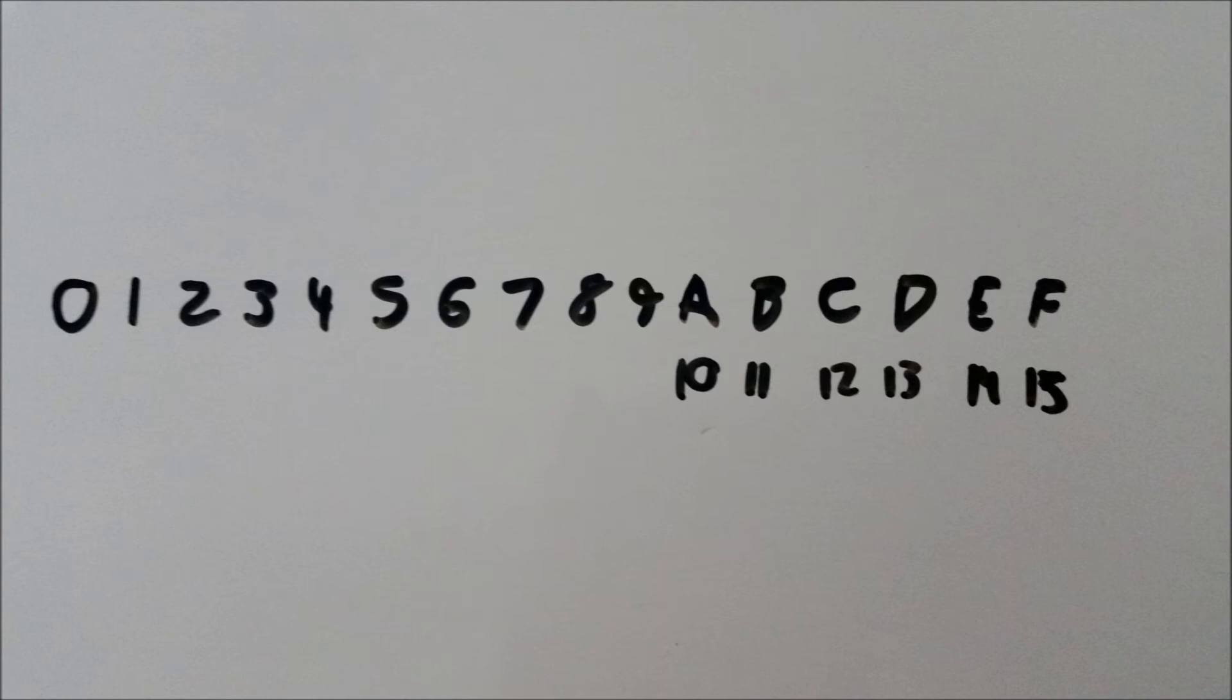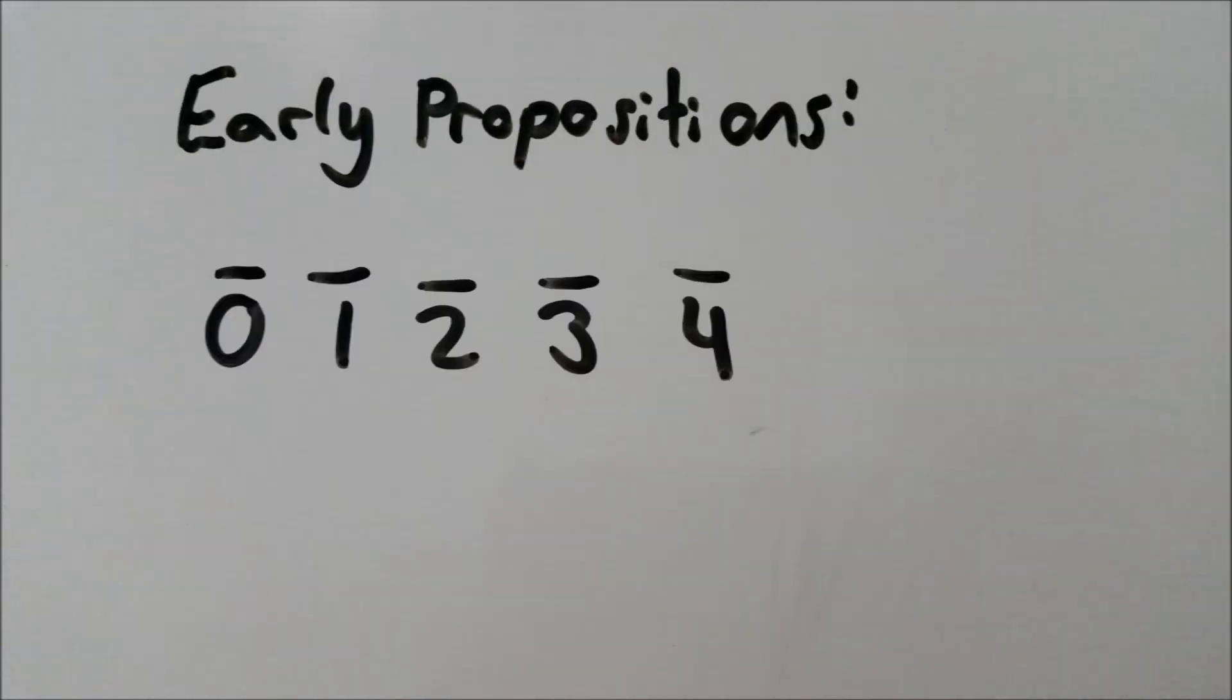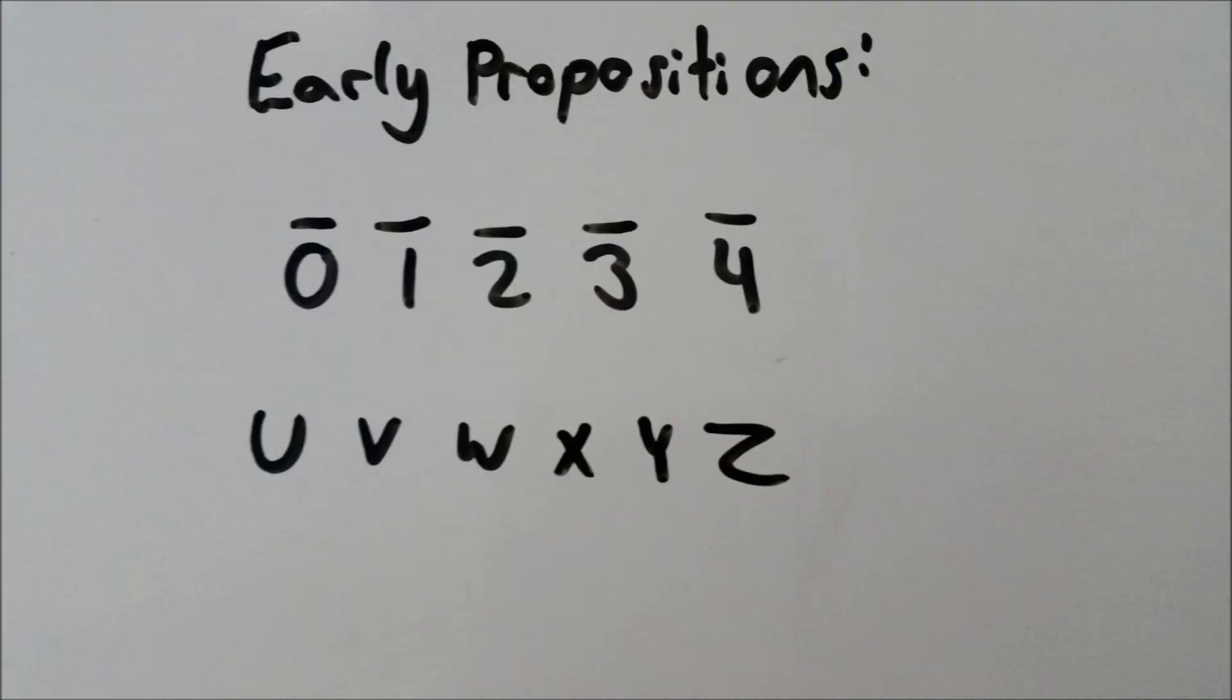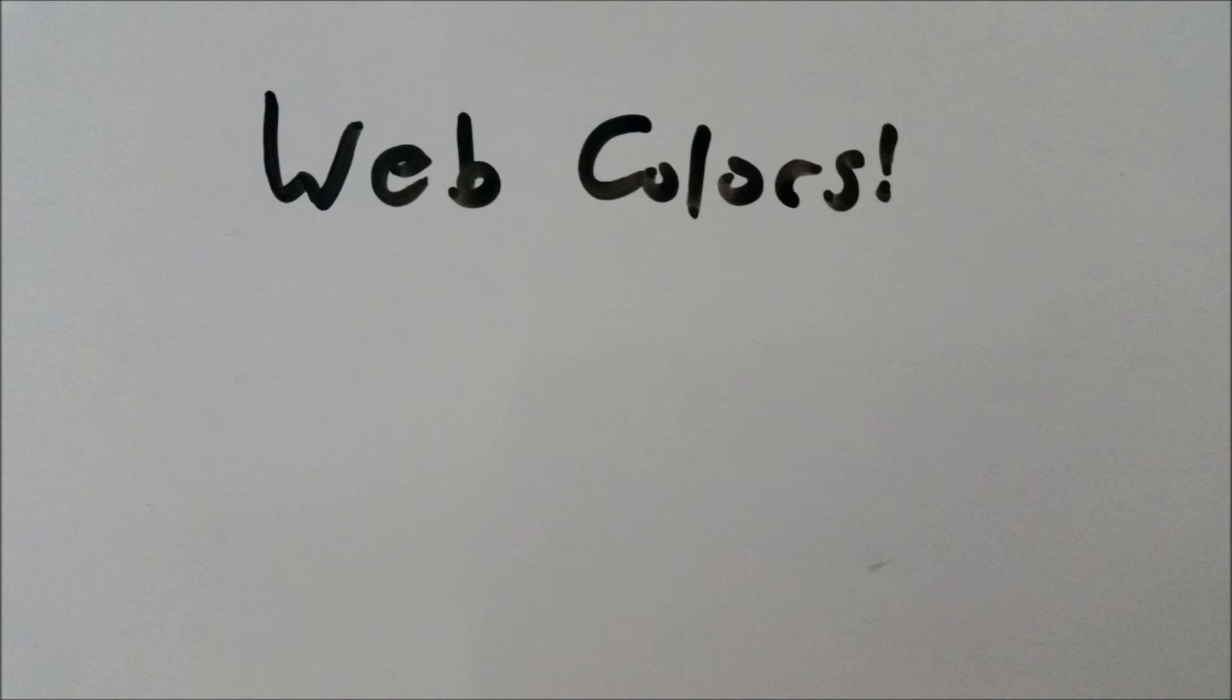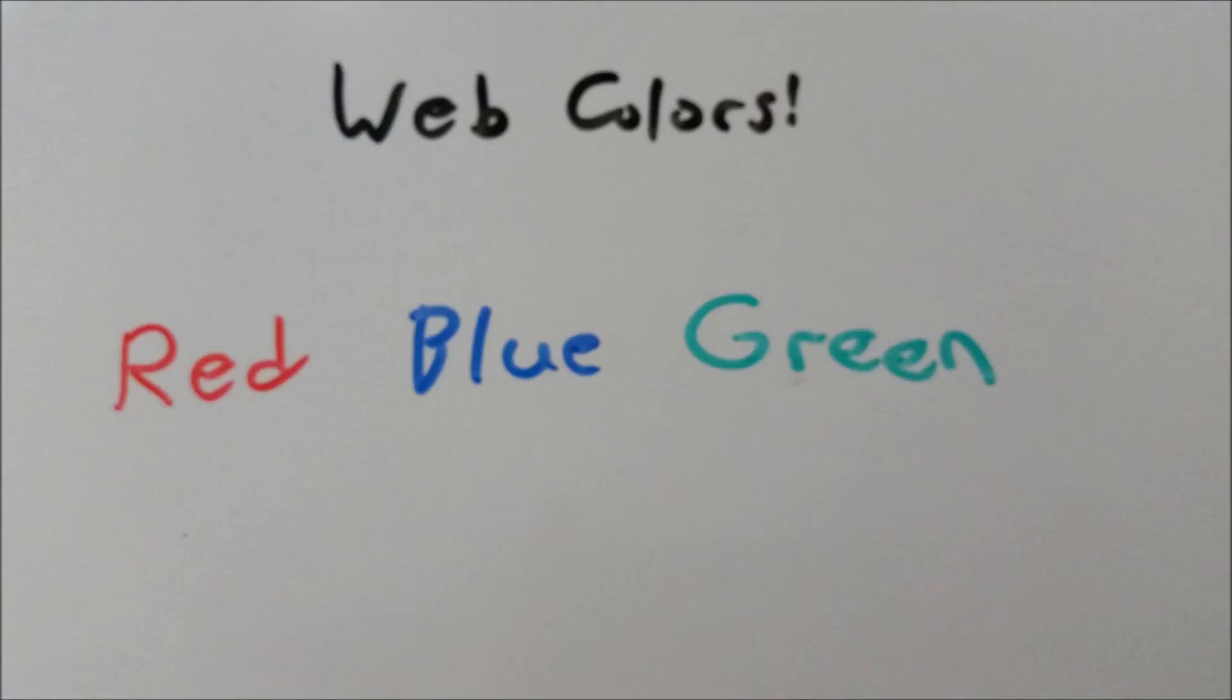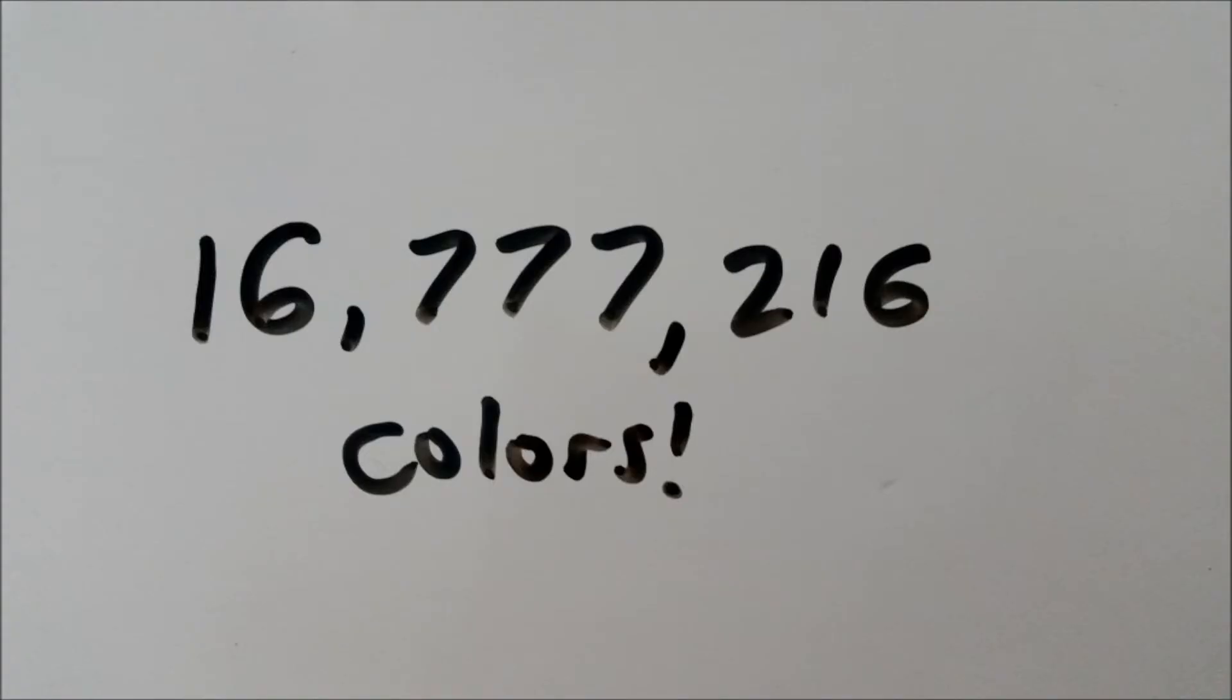To make this representation easier, the numerals are 1 through 9 then the letters A through F. This wasn't the first notation, however. Early propositions include macrons over the digits 0 through 4 after the first 9, using the letters U through Z, or most interestingly, a completely new set of characters made up of bars and hashes. Hexadecimal is also useful for coding web colors because using nibbles makes representing colors easier. If each color—red, green, and blue—makes up two digits worth of shades 0 through F, we get a resulting 16,777,216 possible colors.